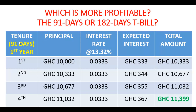Looking at the table here, I've broken it down. The tenure is the duration for maturation of your T-bill — 91 days. The principal is the amount you are going to invest. The interest rate is the rate that will accrue on your invested amount. The expected interest is what you will earn on that principal. The total is the principal plus the expected interest. In a previous video I showed you how to buy Treasury bills on your mobile phone.